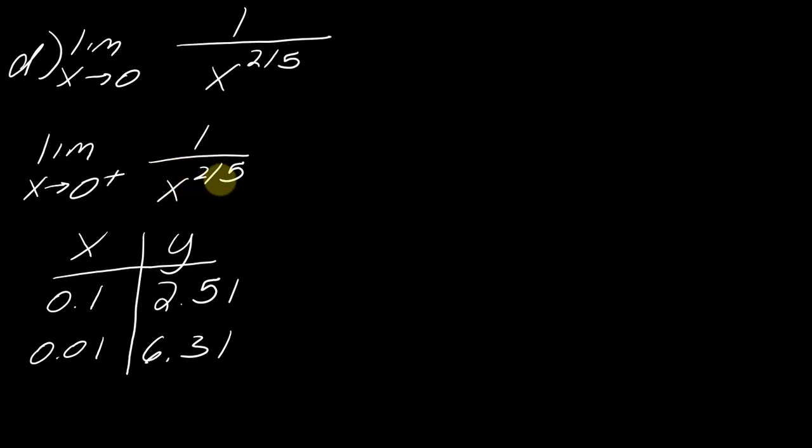So this rational exponent, 2 fifths, first you take the fifth root and then you square that. So you could alternatively think of x to the 2 fifths as taking the fifth root of x and then squaring it. So this will actually always end up positive.